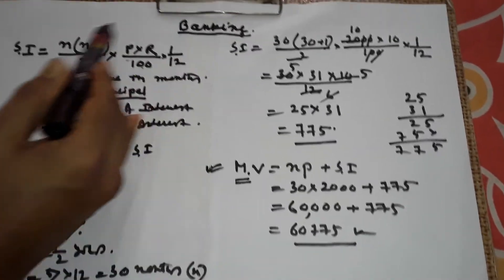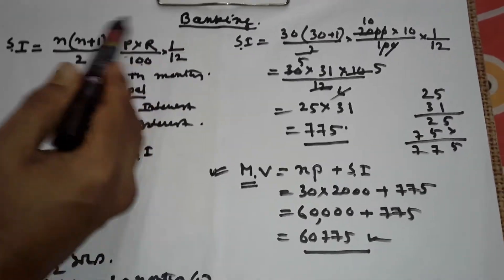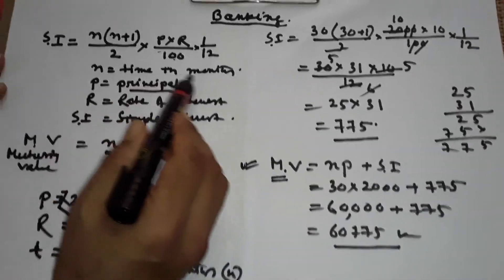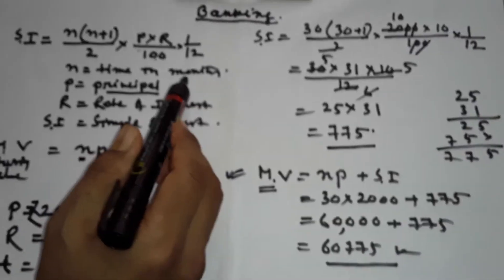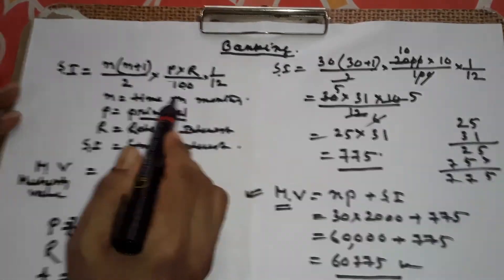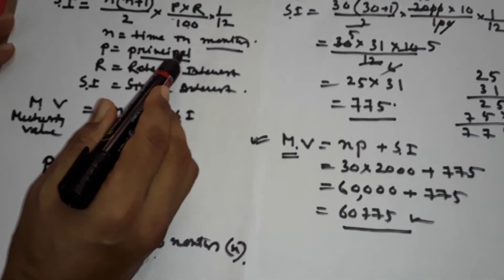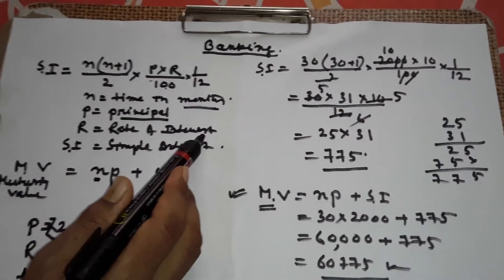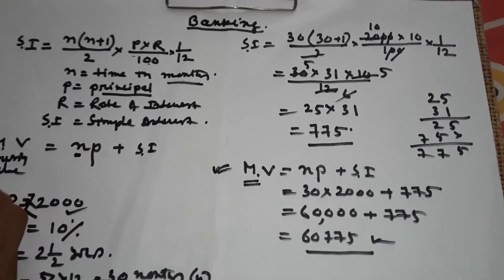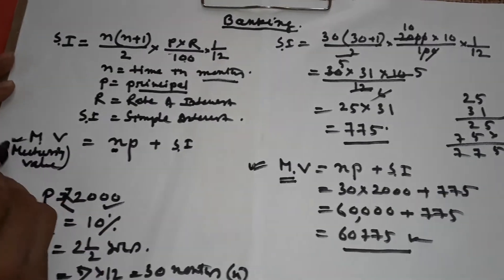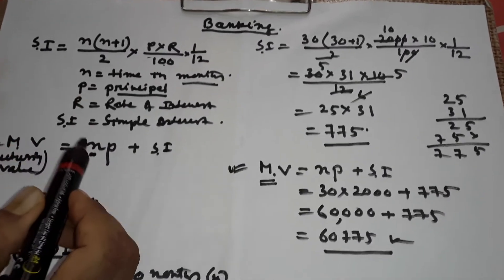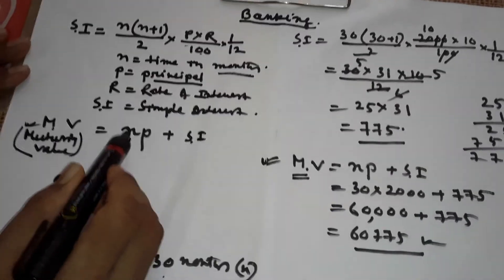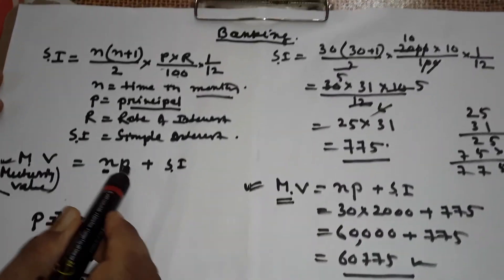By this formula I can find simple interest. Time is always given in months — if time is given in months, that is n. P means the principal amount deposited every month, r means rate of interest. Maturity value tells how much rupees you will get after a given period, using MV = n × P + SI.